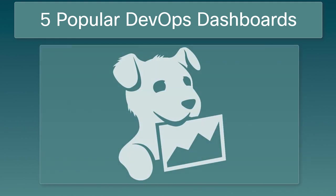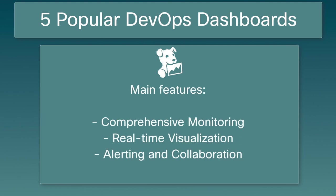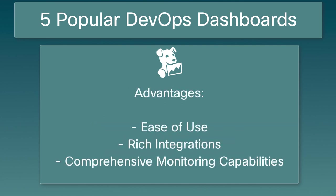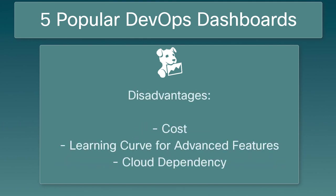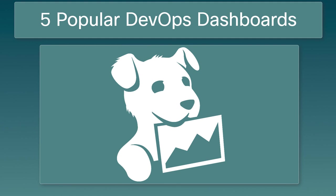Datadog is a popular cloud-based monitoring and analytics platform that offers a wide range of features for creating DevOps dashboards. Main features include comprehensive monitoring, real-time visualization, and alerting and collaboration. Advantages include ease of use, rich integrations, and comprehensive monitoring capabilities. Disadvantages include cost, a learning curve for advanced features, and cloud dependency. Organizations should consider cost implications and evaluate the learning curve when deciding to adopt Datadog.